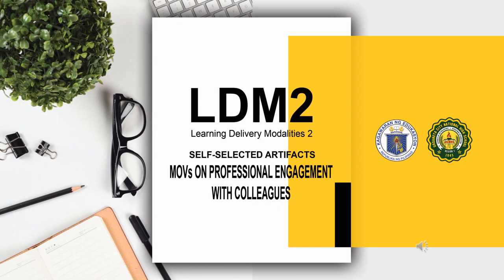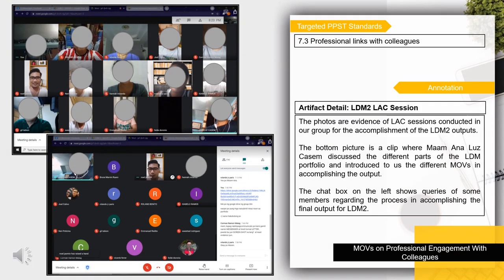The preceding slides contain the artifacts on means of verification on professional engagement with colleagues. The targeted PPST standard is 7.3 Professional links with colleagues. The photos are evidence of LAC sessions conducted in our group for the accomplishment of the LDM2 outputs. The bottom picture shows Madam Luz Kasim discussing the different parts of the LDM portfolio and introducing the different MOVs. The chat box on the left shows queries from members regarding the process in accomplishing the final output for LDM2.